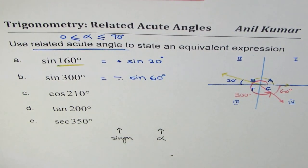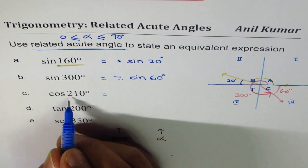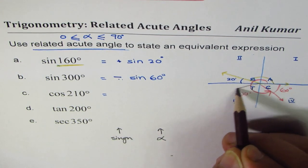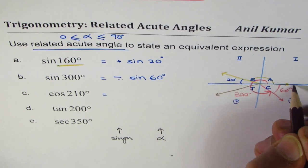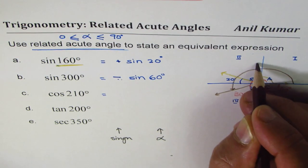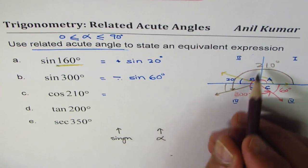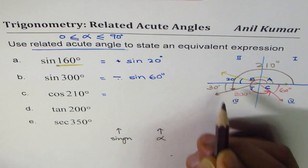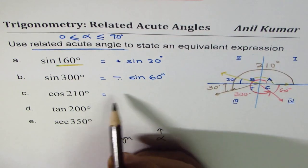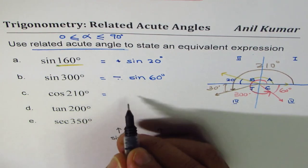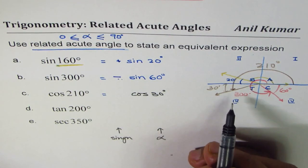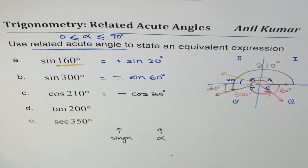Now for cosine of 210 degrees. 210 is more than 180, so the terminal arm is in quadrant three. The acute angle is 210 minus 180 = 30 degrees. Cosine is negative in quadrant three, so we write a negative sign. Therefore, cosine 210 degrees equals negative cosine 30 degrees. It's a simple two-step process.